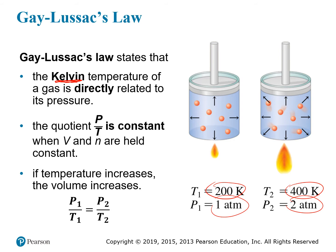Mathematically, we can say that the quotient P divided by T is constant, as long as you're holding the volume and the number of particles fixed. We can express this as the equation P1 divided by T1 equals P2 divided by T2.